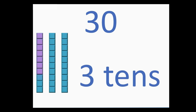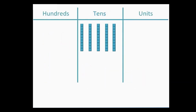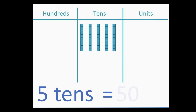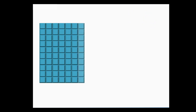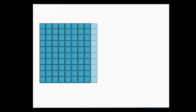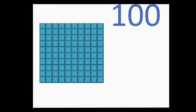Here we have one, two, three, four, five — five tens, which is 50. Here we have 10, 20, 30, 40, 50, 60, 70, 80, 90, and 100. We can exchange the ten rows of ten, which gives us one flat grid of 100.